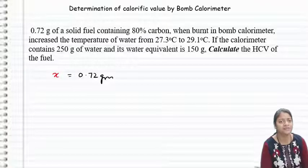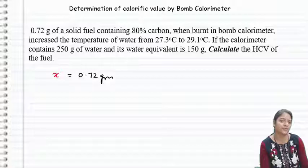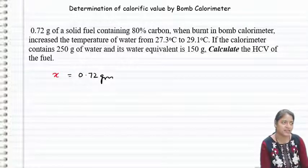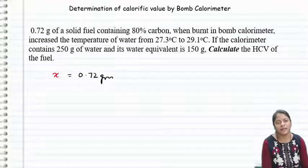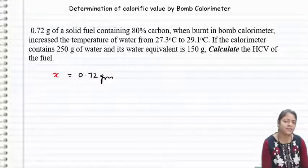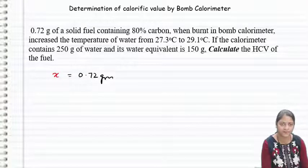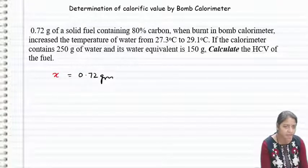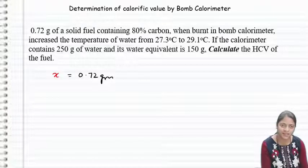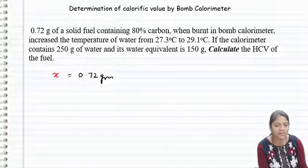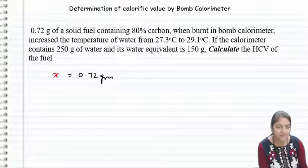When burnt in a bomb calorimeter, the 80% carbon can be confirmed by the Dulong formula. When burnt in a bomb calorimeter, it increases the temperature of water from this to this.